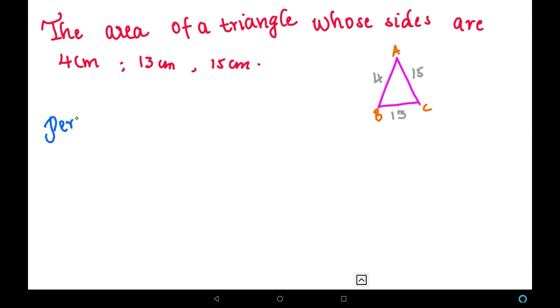Let's go to the solution. The perimeter of triangle, that is S, equals a plus b plus c by 2. Here a, b, and c are nothing but the sides of the triangle. So a indicates 4 centimeters, b indicates 13 centimeters, and c indicates 15 centimeters.